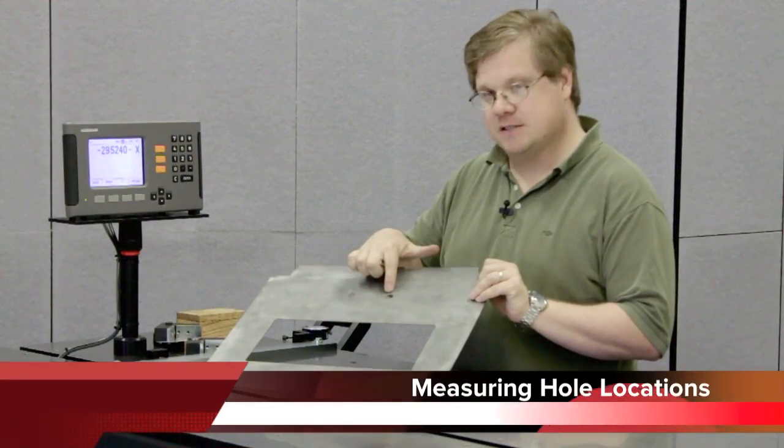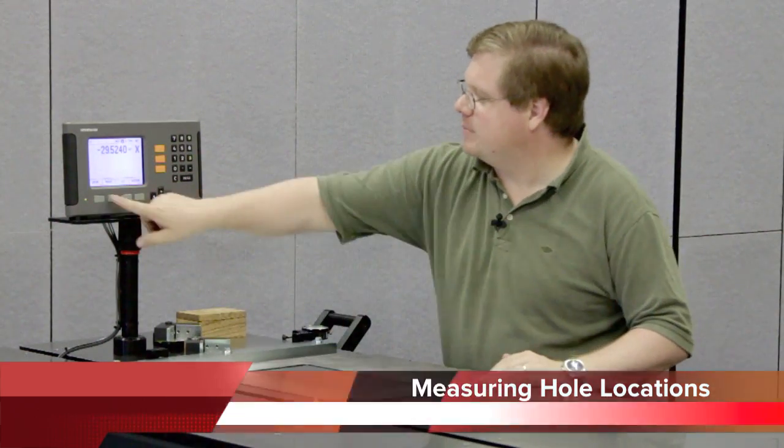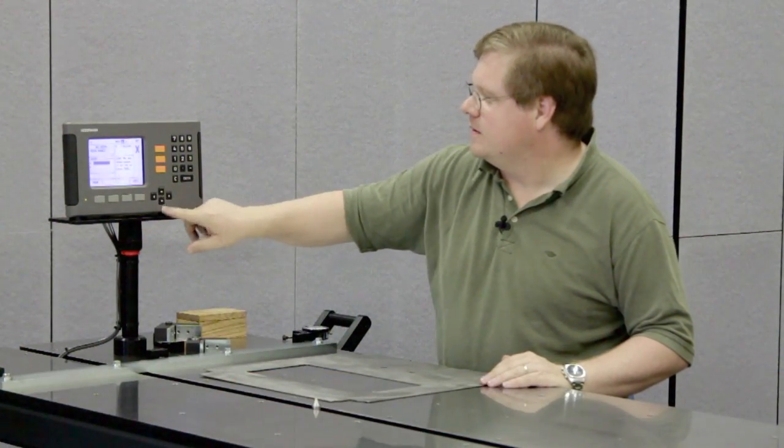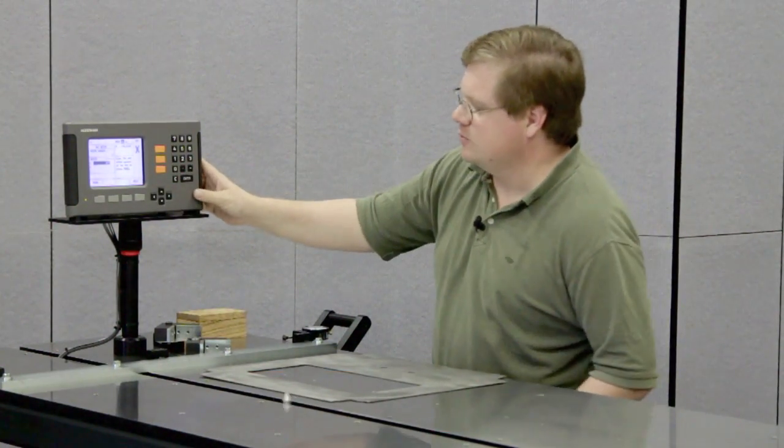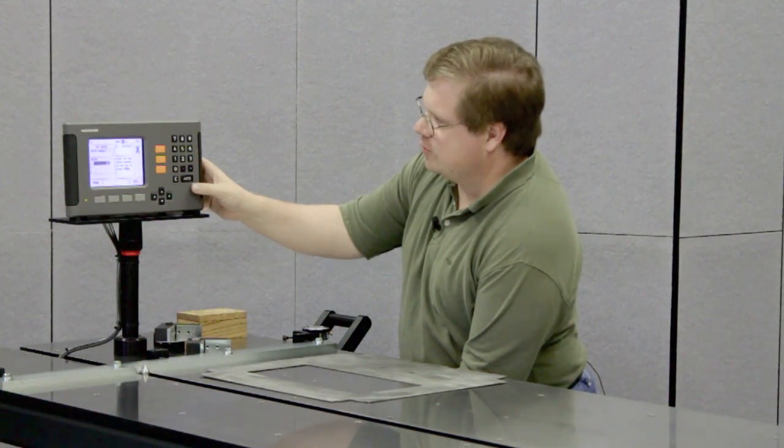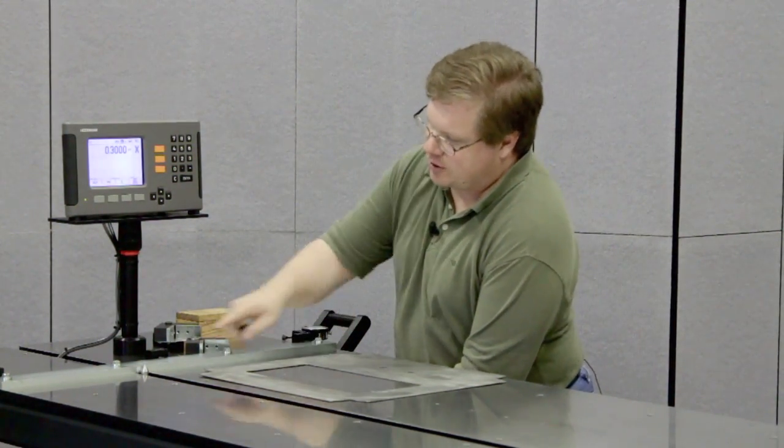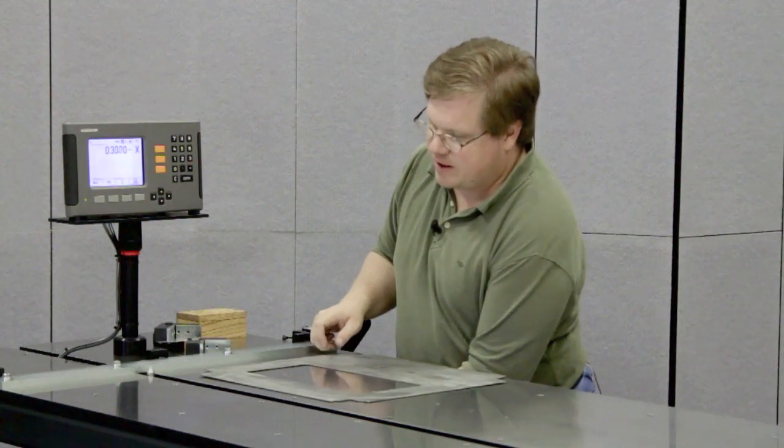If you want to check hole locations, you can do this by setting up a datum, and we'll set the X equal to half the diameter of the probe tip. You do that right up against the stop bar, so now it's measuring to the center of that point.